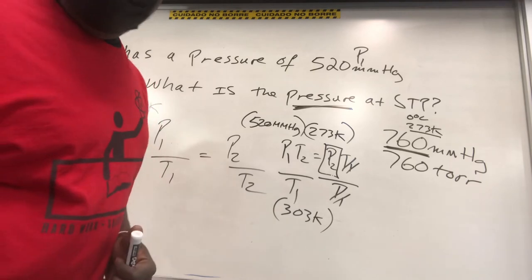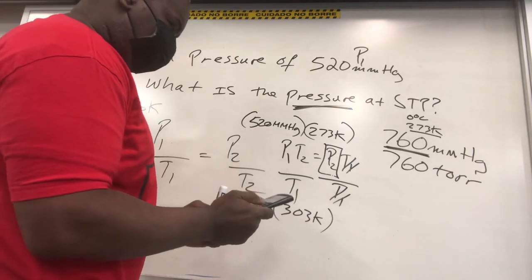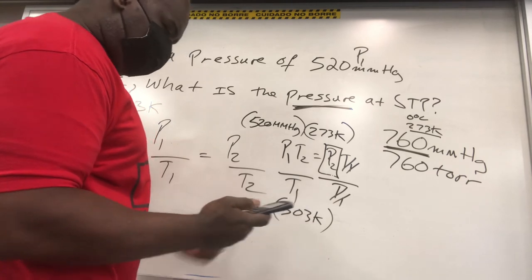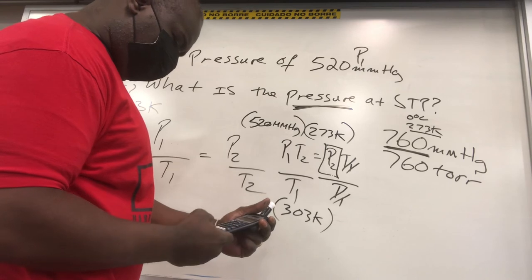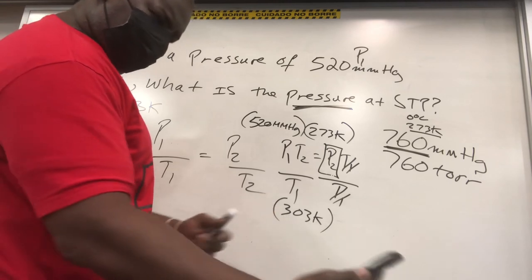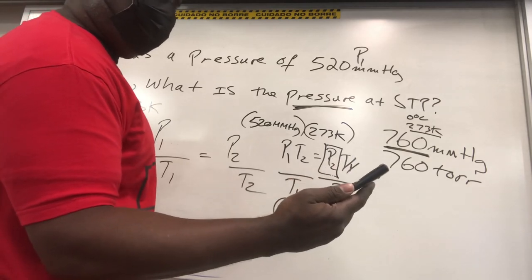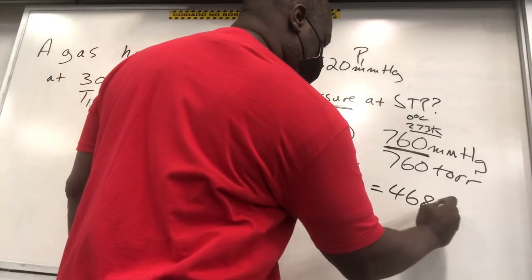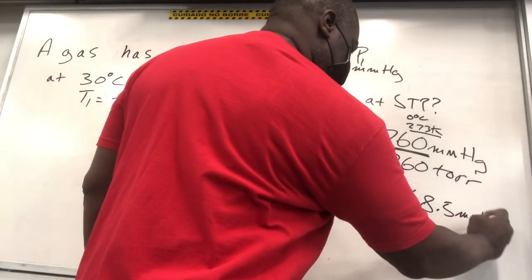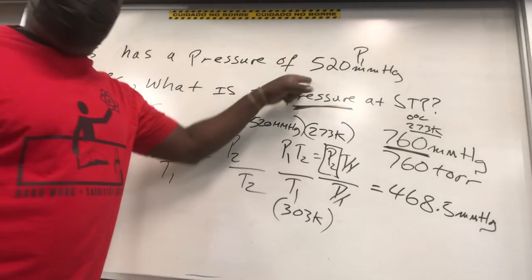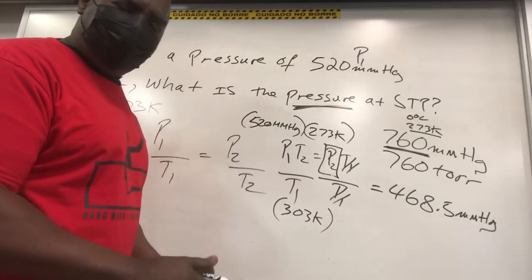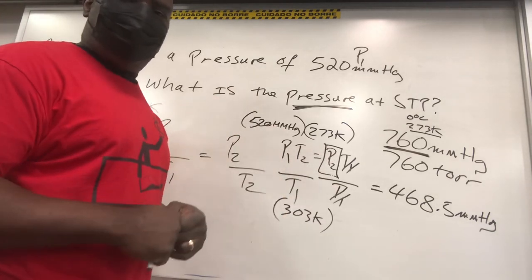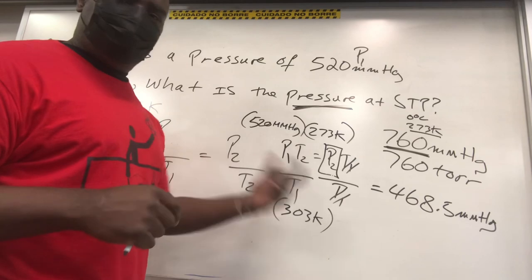Let's wrap it up. So we've got 520 times 273. That equals to that, and we divide by 303. 468.5. I'm going to trust that answer. So the answer is 468.5 mmHg. It's less than our original pressure. Why does it make sense? Because the temperature is going down, we're cooling the gas system. So it makes sense that the pressure will go down because the gas particles are moving around. We have less frequency of collisions, no problem, less pressure.